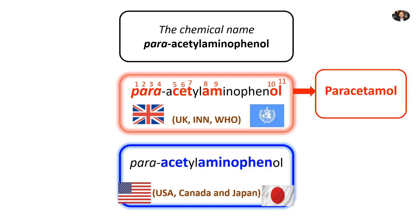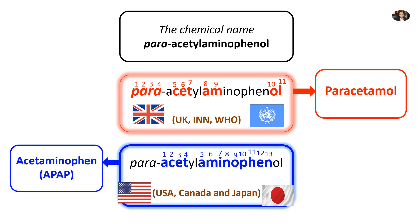However, the USA, followed by Canada and Japan, chose different 13 letters to build their own generic name, which is acetaminophen. And so we ended up with two different scientific names for the same drug.